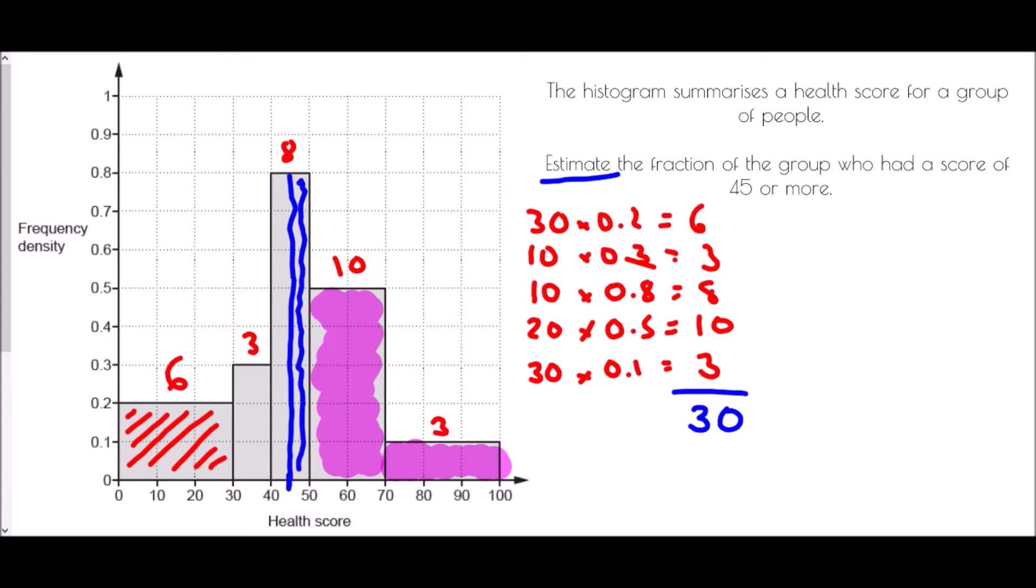So this line here beyond 45, this is exactly half of the people who were in that group. We are dealing with 10 people and 3 people and then 4 people, half of this group, and so that is 17 people. Our fraction that we would estimate would be 17 out of 30 who scored more than 45.